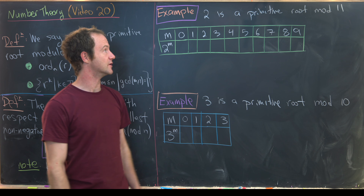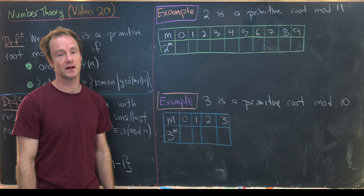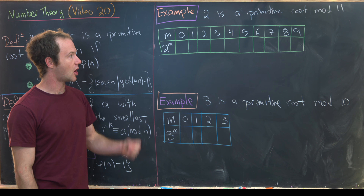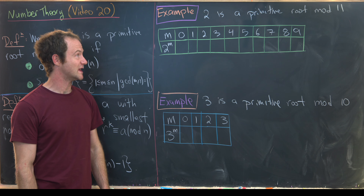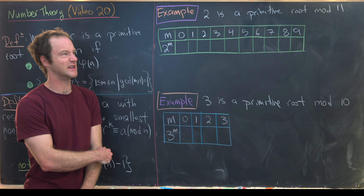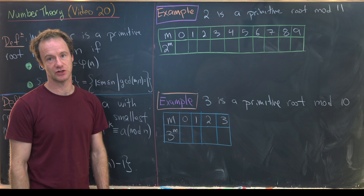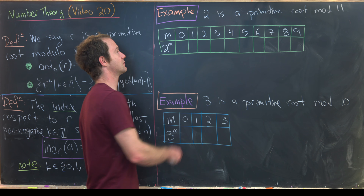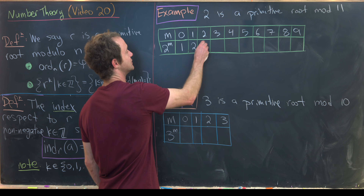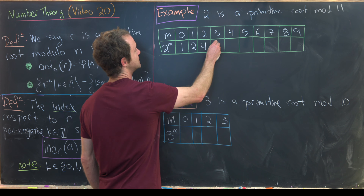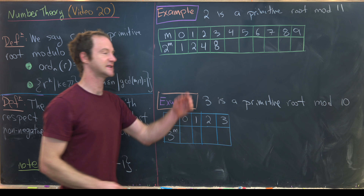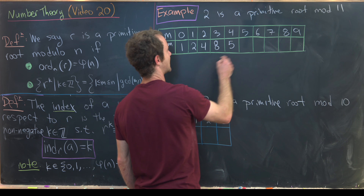Let's run through some basic examples. First, 2 is a primitive root mod 11, which means we can produce all numbers between 1 and 10 by taking powers of 2. So: 2^0 = 1, 2^1 = 2, 2^2 = 4, 2^3 = 8, and 2^4 = 16, which is 5 mod 11.